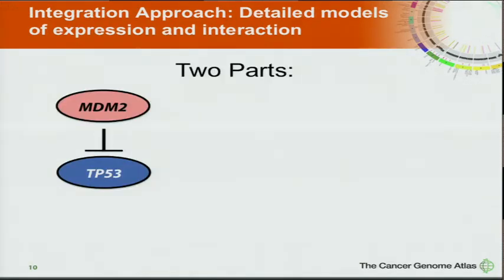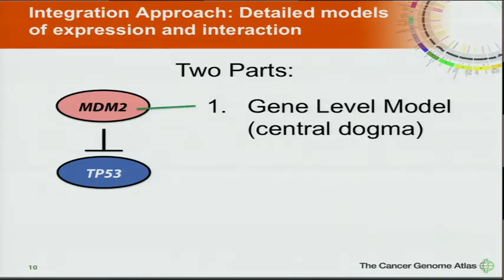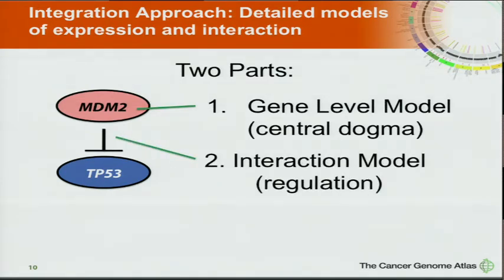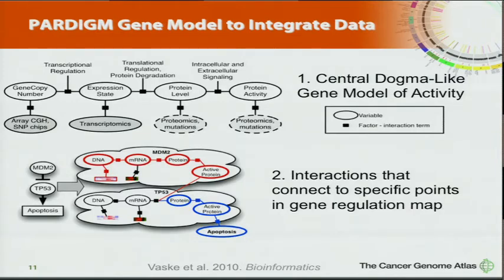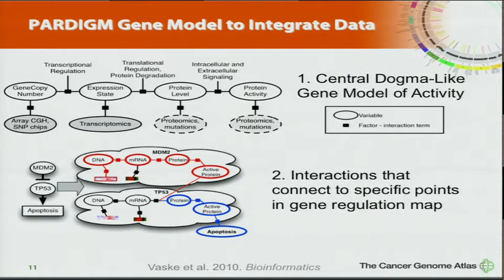There are two parts to this system we model: the regulation of MDM2's activity, and the interaction between it and P53. When you see our activities for genes, it's actually a richer representation that looks something like the central dogma for a gene — a certain number of copies in the genome, expression level, protein level, and protein activity. All these variables are beliefs inferred from data, and these constraints help propagate information to infer higher-level things like apoptosis or gene activities used in downstream analysis.